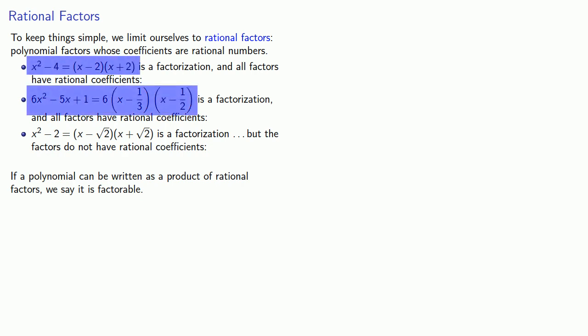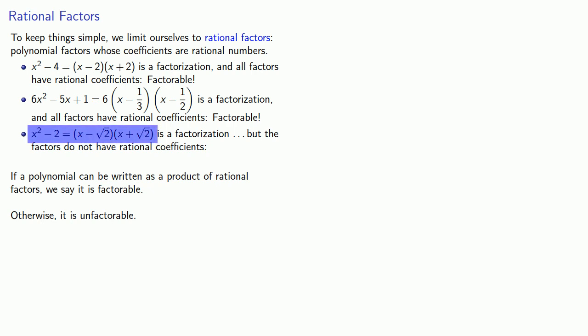So these two are factorable. Otherwise, we say that the polynomial is unfactorable. So this is a factorization, but it's not a rational factorization, and so this is unfactorable. Well, maybe. Maybe we just haven't found the factorization. So let's think about this a little bit.